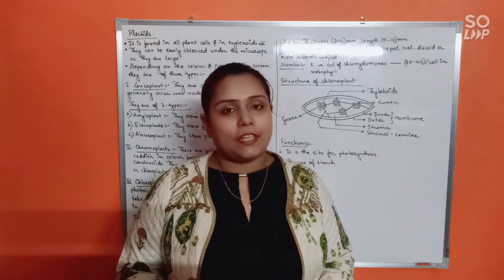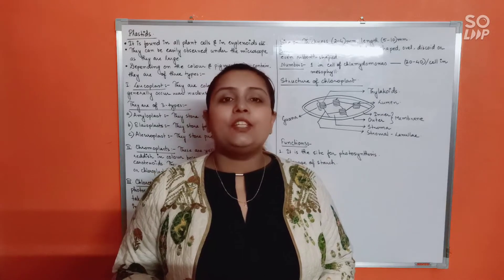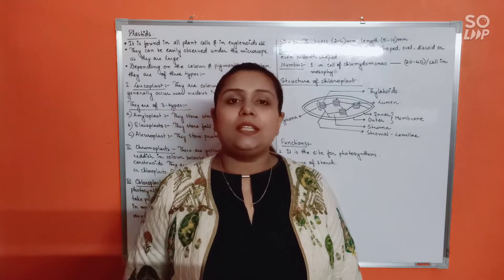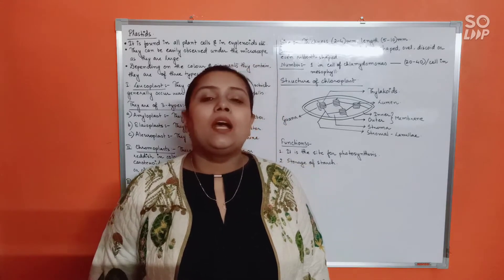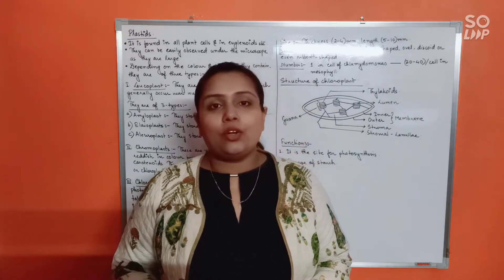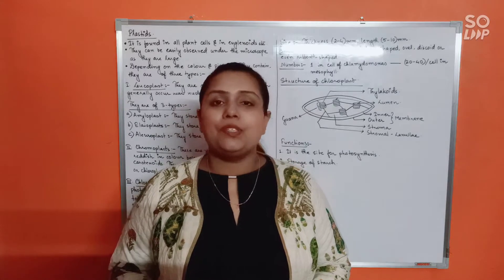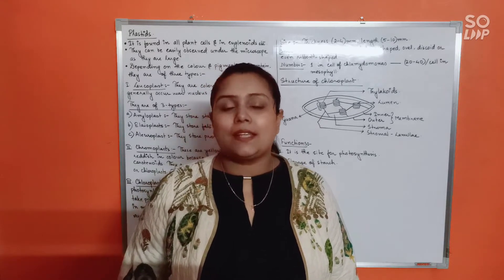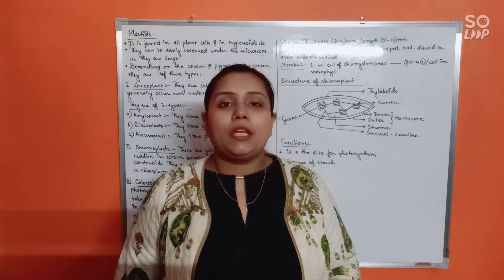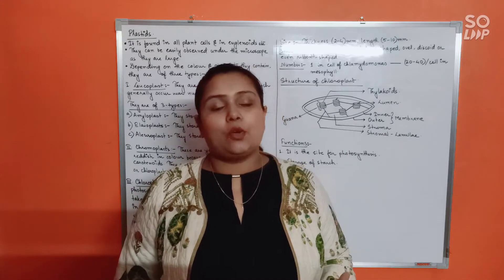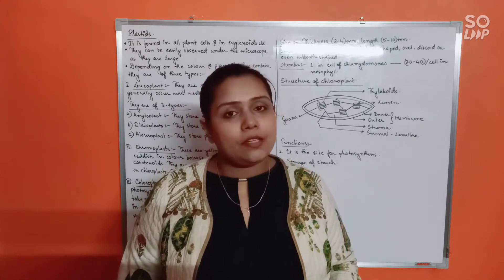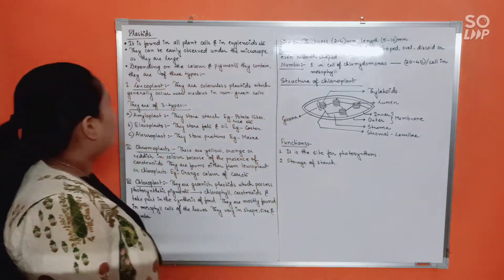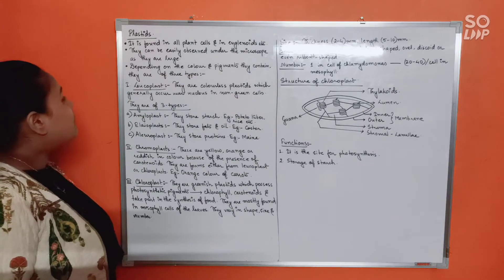Hello students, in today's class we're going to discuss yet another very important cell organelle - plastids. Plastids, just like mitochondria, are also double membrane bound cell organelles. According to the various types of pigments they possess or the color they have, they can be of various types that we're going to discuss today.